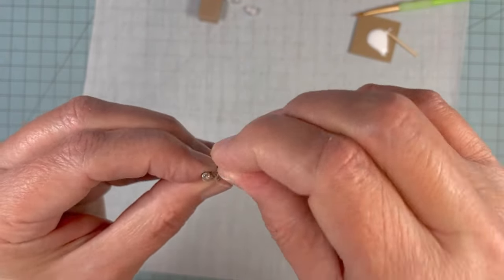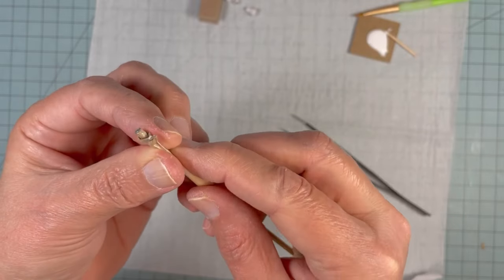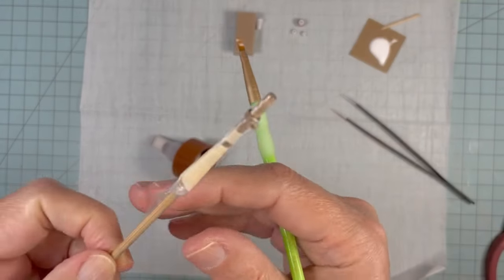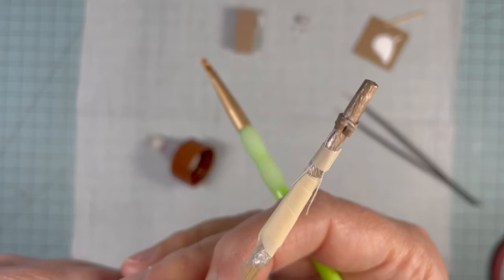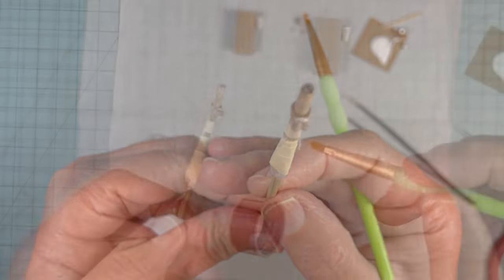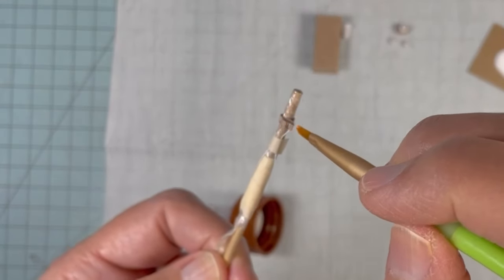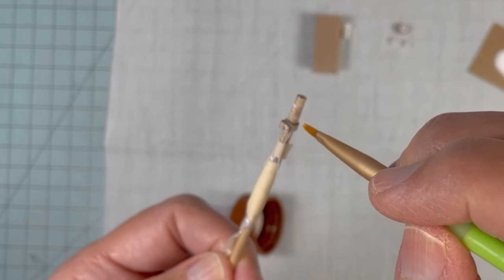I'm wrapping string around it to keep it closed up and on the dowel. And now I'm painting it with wood glue. This part is very fiddly, so you may want to use something else instead of the method that I'm showing.